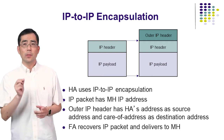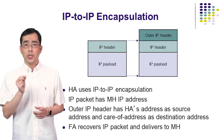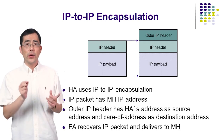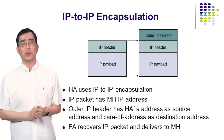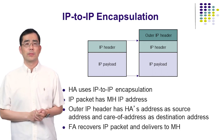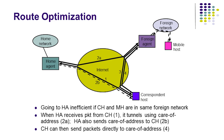Packets transmitted by the mobile host to the correspondent host typically use a normal IP packet format with the mobile host address as the source IP address and the correspondent host address as the destination IP address. These packets follow the default route. We can observe that the route traveled by the packet from the correspondent host to the mobile host is typically longer than that from the mobile host to the correspondent host. Several proposals exist to improve this routing mechanism so that the correspondent host may send packets directly to the care-of address endpoint in subsequent exchanges.